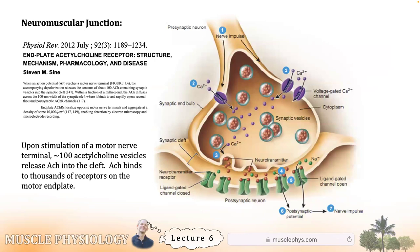When the action potential finishes traveling down a motor neuron and reaches the terminal, voltage-gated calcium channels open, permitting calcium to enter. There are synaptic vesicles — like tiny balloons that contain acetylcholine — and each one contains 5,000 to 10,000 molecules of acetylcholine. The calcium that comes in binds to proteins on the surface of those vesicles.